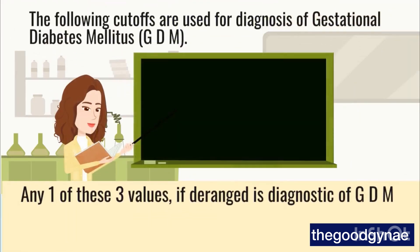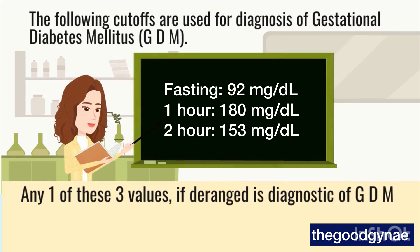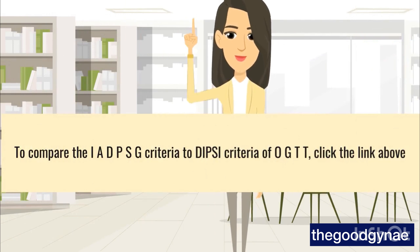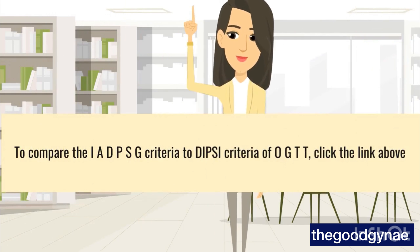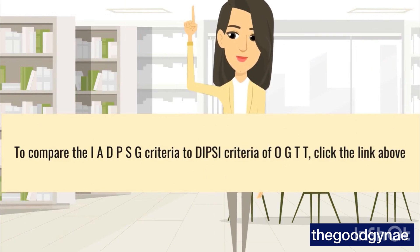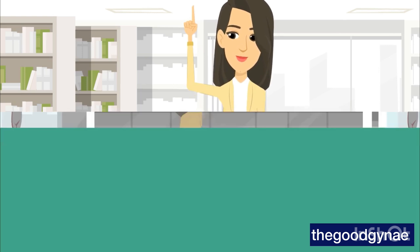The following cutoffs are used for diagnosis of gestational diabetes mellitus, GDM. Any one of these three values, if deranged, is diagnostic of GDM. To compare the IADPSG criteria to DPSI criteria of OGTT, click the link above.